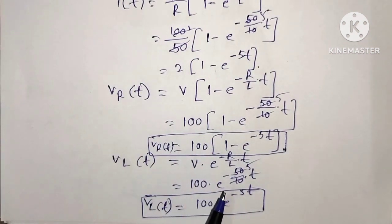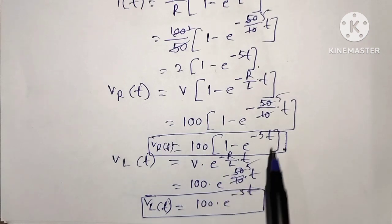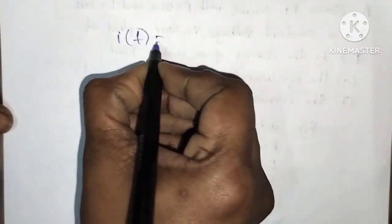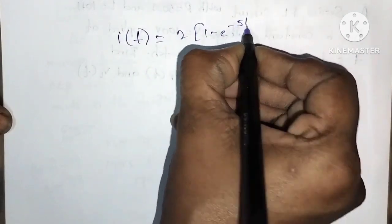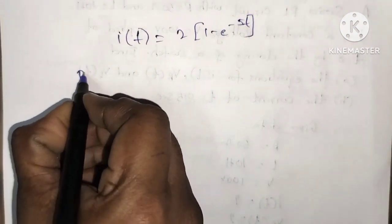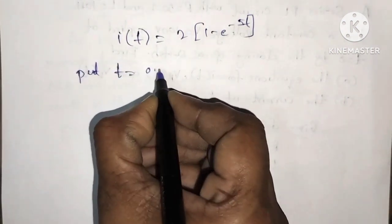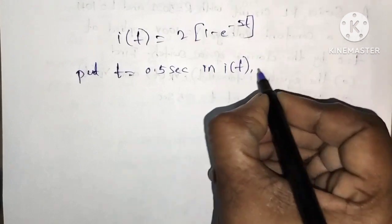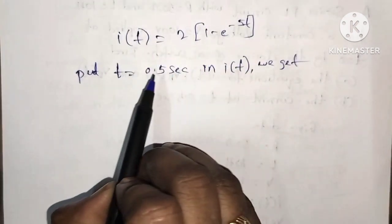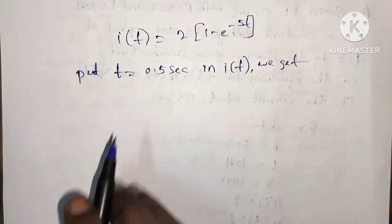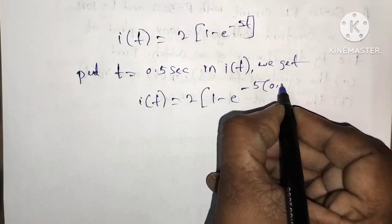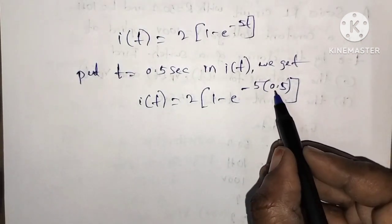Second point: find the current at t equal to 0.5 seconds. Using I of t equal to 2 of 1 minus e power minus 5 into T, substitute t equal to 0.5 seconds. So I of 0.5 equal to 2 of 1 minus e power minus 5 into 0.5, which gives 2 of 1 minus e power minus 2.5.